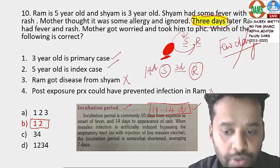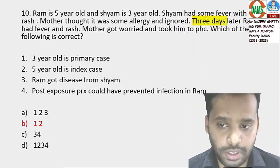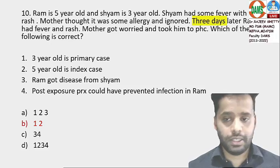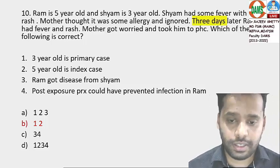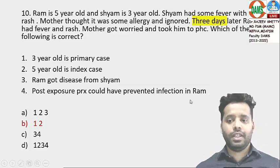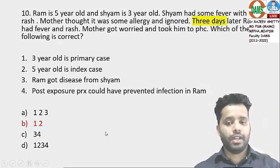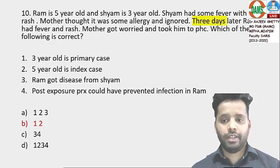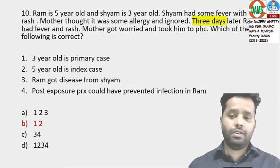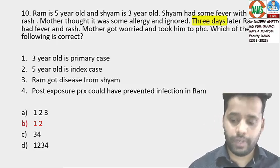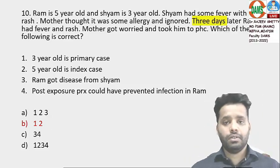This question took extra time because the keyword 'three days' is the trick. If the question had said 'few days,' it could imply 10–12 days and then all options A, B, C, D could be correct. But because it specifically says three days, Ram cannot be a secondary case. Colleagues confirmed: with three days mentioned, the answer is options 1 and 2. The examiner is clever — he is also not using the word 'secondary case' in the question.